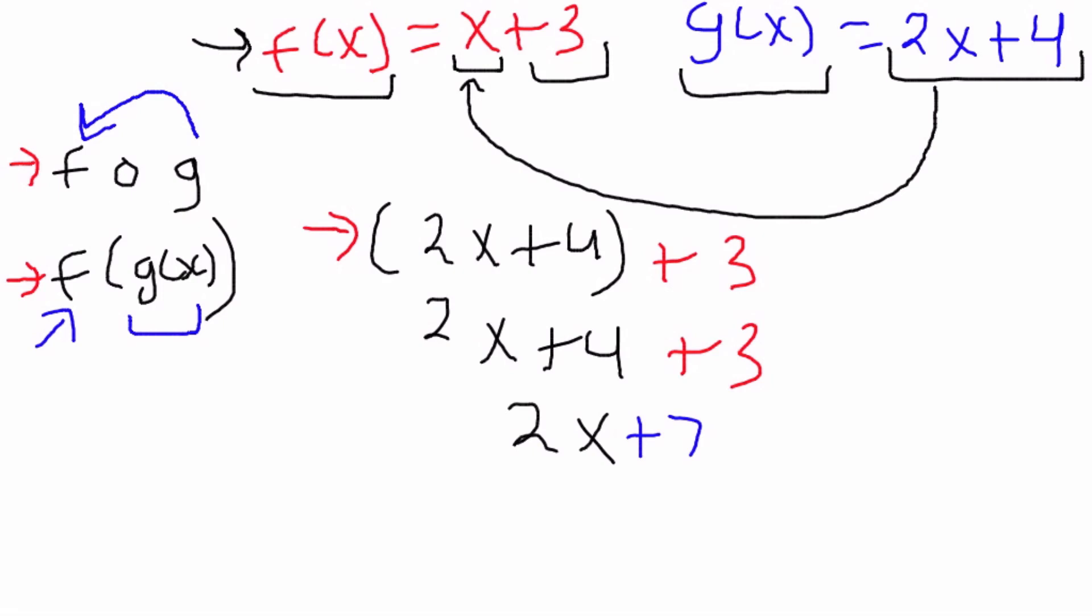So there we have it. The composite function f o g is going to be 2x plus 7. Thank you for watching. Until next time.